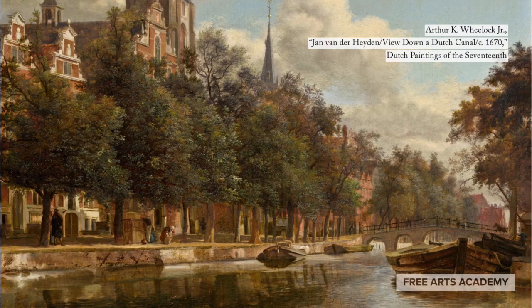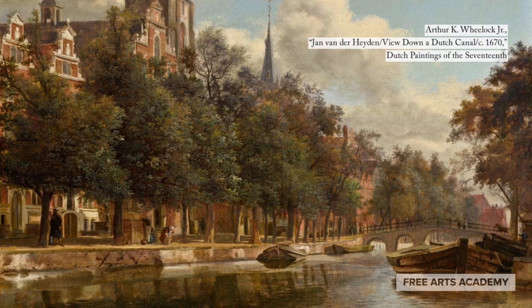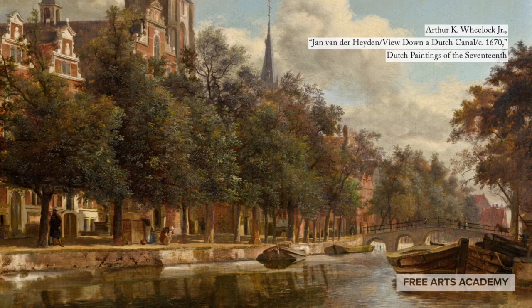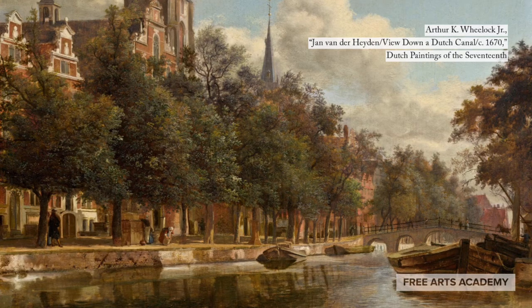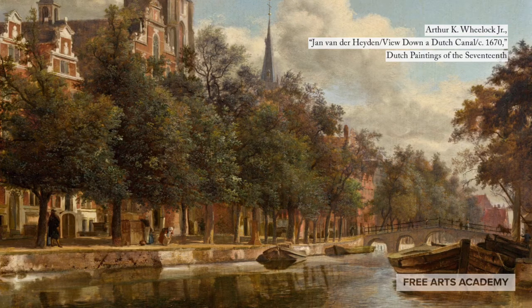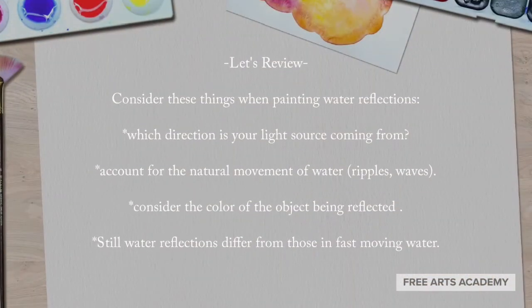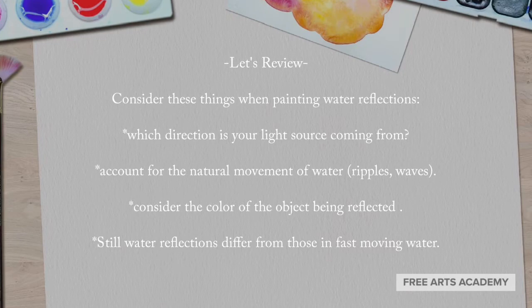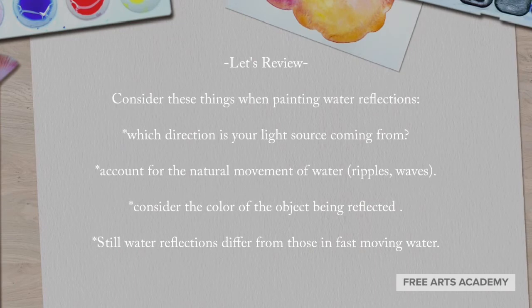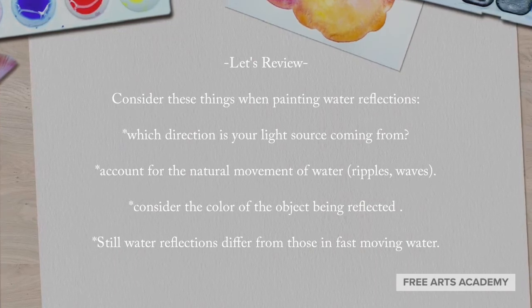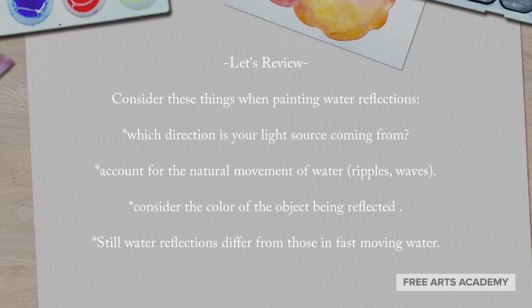Considering that our light source is the sun, we know that light is showing up in this image at an angle which affects our shadows. When painting reflections on still water, remember that the image of what's being reflected will be flipped upside down. Also consider that the water itself will have its own hue, which will distort the natural color of the image being reflected. To summarize: consider which direction your light source is coming from; account for the natural movement of water, including ripples and waves; always consider the color of the object being reflected; and know that still water reflections differ from those in fast-moving water.